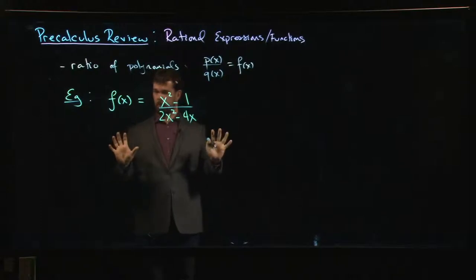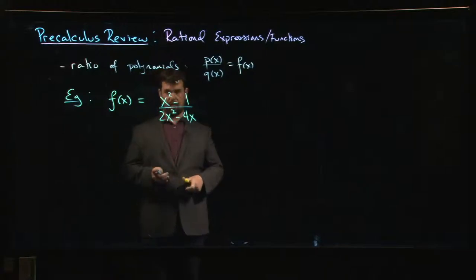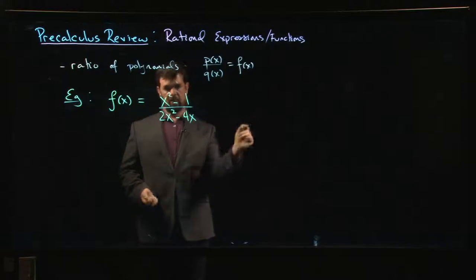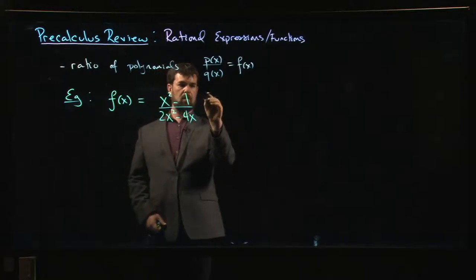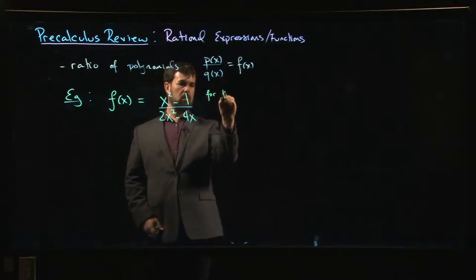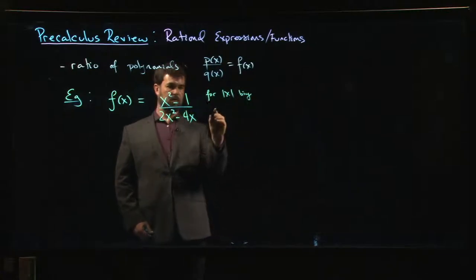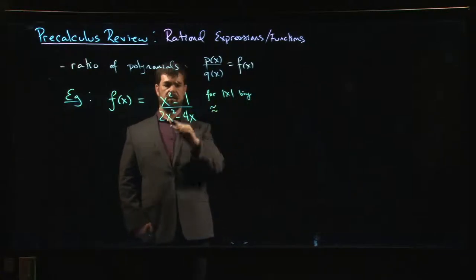Okay, so here's another example with a rational function where we're going to try to get out all the information that we can and see if we can draw a graph. One of the things we might do before we even try to factor is say, well, when the absolute value of x is really big, this thing is approximately x squared over 2x squared, which is just one-half.